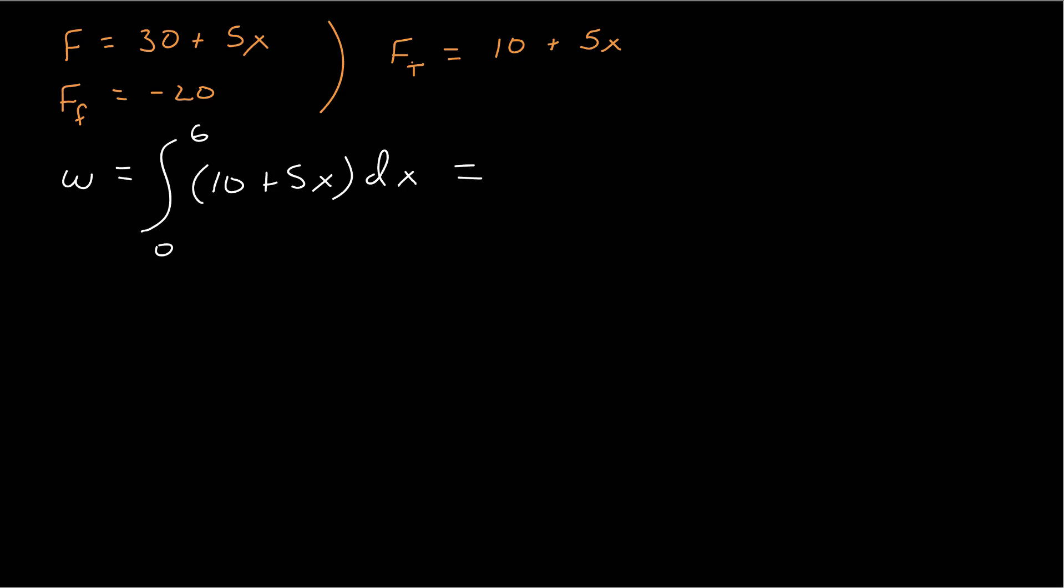The indefinite integral, 10x plus 5x squared over 2, evaluated between 6 and 0. And that just gives me 60 plus, then 90 again, 36 divided by 2 is 18 times 50, and then 150 joules, which is consistent with what I had before.